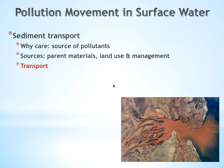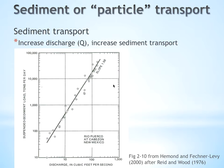Here we're going to talk more specifically about the things that influence sediment transport, starting with what makes sediment move downriver. The biggest thing is if you increase river discharge or velocity, you're going to increase sediment transport. This figure shows suspended sediment load on the x-axis increasing logarithmically and discharge in cubic feet per second on the y-axis, also logarithmically. As you increase discharge, you increase very quickly the amount of sediment load the river is carrying.